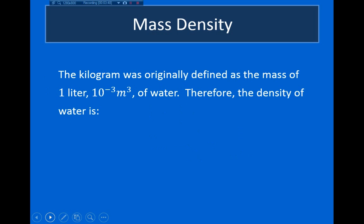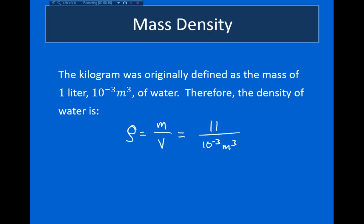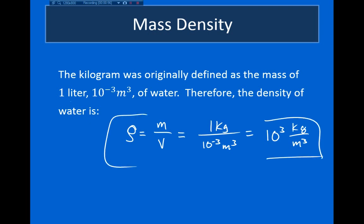It turns out our SI unit of mass, the kilogram, is actually defined in terms of the mass of water. The kilogram was defined as the mass of one liter of water, and one liter is 10⁻³ cubic meters. Using this definition, the density of water equals mass divided by volume: one kilogram divided by 10⁻³ cubic meters, which gives 10³ kilograms per cubic meter. This is a good number to keep in mind since we'll be talking about water a lot — the mass density of water is 10³ kg/m³.